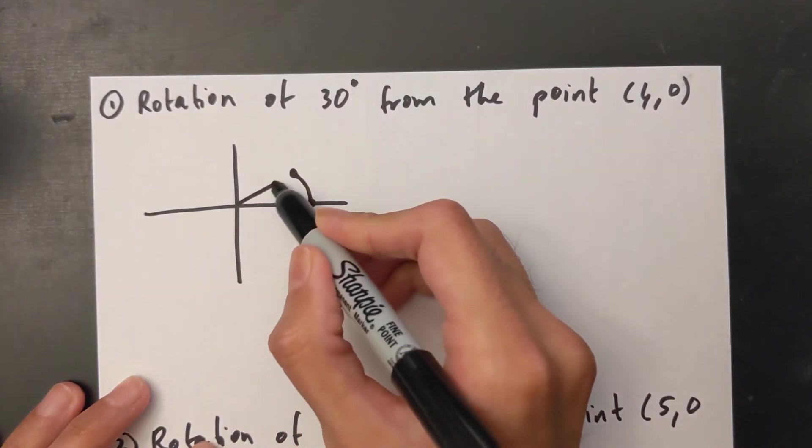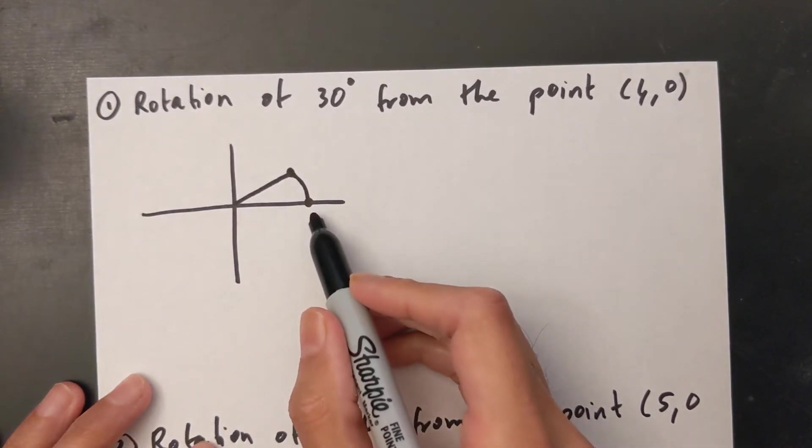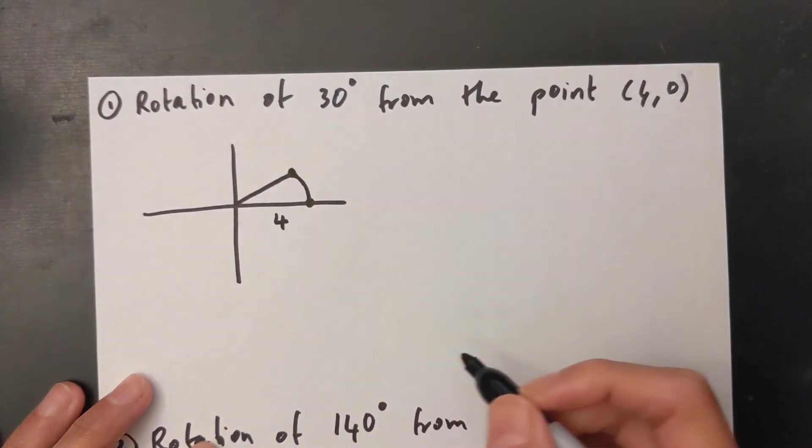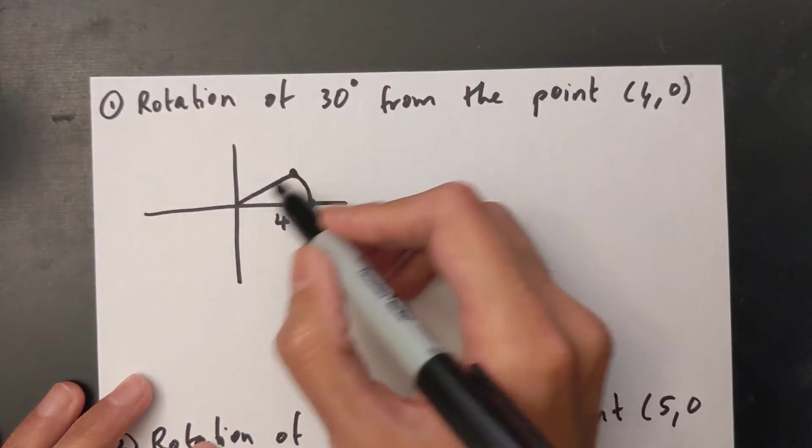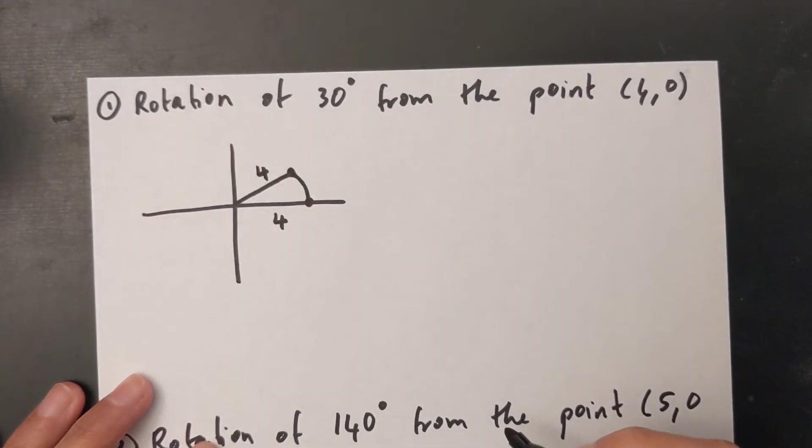I'm going to draw this out over there as well. So I know that this point is (4,0), which means that the bottom here is going to be 4. Now anytime you rotate something, the other side is also going to be the radius, which means this side here is also 4.